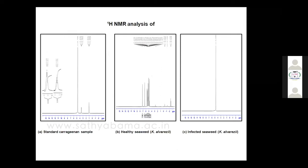In the NMR analysis, we used standard carrageenan on the left side. You can see peaks at 4.7, 3.5, and 1. In the healthy seaweed, we can see many peaks — along with carrageenan, other sulfated polysaccharides and carbonated compounds are also there. But in the infected seaweed, all these carrageenan molecules are degraded. You can see only a single peak — there is no presence of any carrageenan molecules, related compounds, or derivatives.